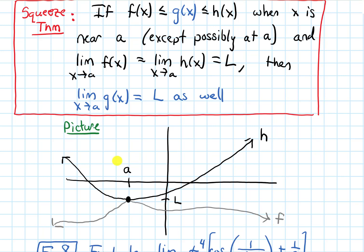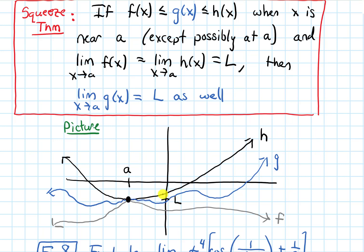Now, g(x) is between those two functions. If I try to draw a function that's in between f and h, as I get close to a, I'm sandwiched or squeezed in from both sides. So as I get super close to a, g gets squeezed in and will have that same limit L as x approaches a. That's conceptually why the squeeze theorem is true.